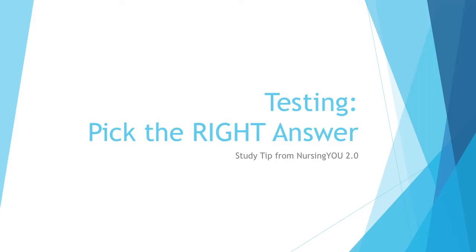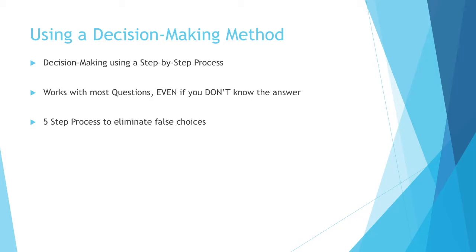Hi guys, this is another study tip from NursingU 2.0, and this is talking about testing and picking the right answer. The method I'm going to go through is a decision-making method. You might have heard decision tree or step-by-step breakdown. There are five steps to this decision-making method, and it's going to help you eliminate false choices. Even if you do not know the answer, you can usually figure it out by eliminating all the other choices.